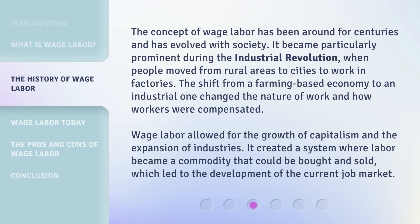The concept of wage labor has been around for centuries and has evolved with society. It became particularly prominent during the Industrial Revolution, when people moved from rural areas to cities to work in factories. The shift from a farming-based economy to an industrial one changed the nature of work and how workers were compensated. Wage labor allowed for the growth of capitalism and the expansion of industries, creating a system where labor became a commodity that could be bought and sold, which led to the development of the current job market.